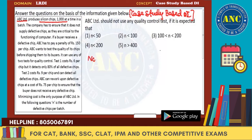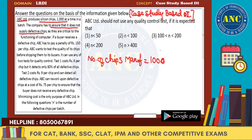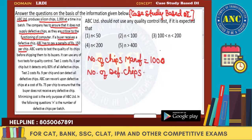The number of chips manufactured is one thousand. The company has to ensure it does not supply defective chips, as they are critical to the functioning of a computer. If a buyer receives a defective chip, ABC has to pay a penalty of 150 rupees per chip. The number of defective chips per batch is given by N.